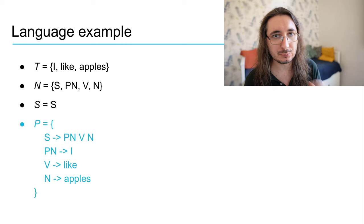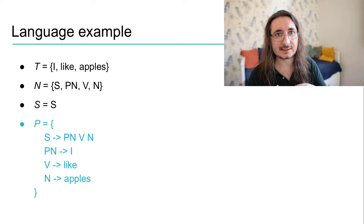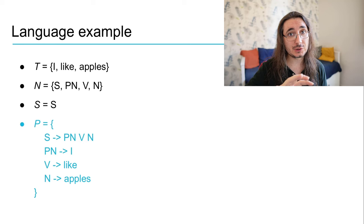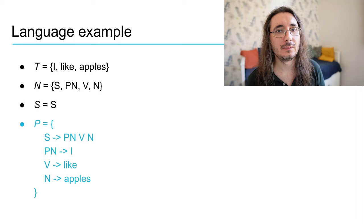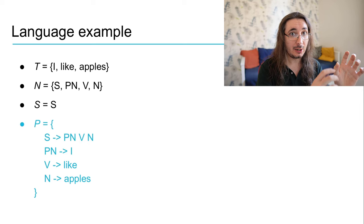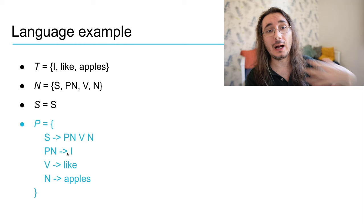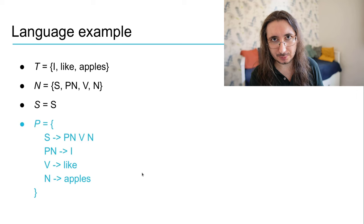Here is the set of all the production rules in this grammar. The first one tells us that whenever we encounter the S symbol — the sentence — we map it onto three symbols: PN (pronoun), a verb, and a noun. Then we have three other replacement rules that go from non-terminals to terminals: we map a pronoun to I, a verb to like, and a noun to apples.